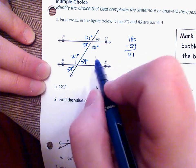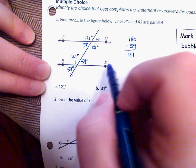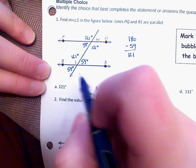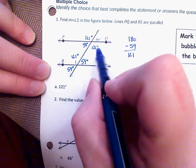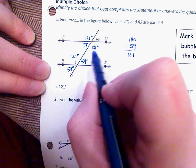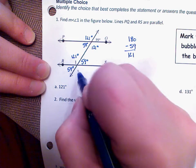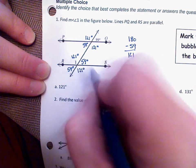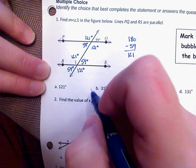So we really only have two different angle measures. All of the acute angles are congruent. They're all 59 degrees. All of the obtuse angles are congruent. They're all 121 degrees. And the obtuse and the acute angle have to add to get 180.